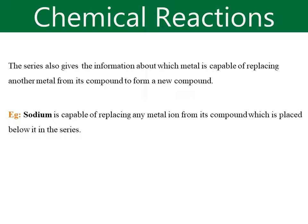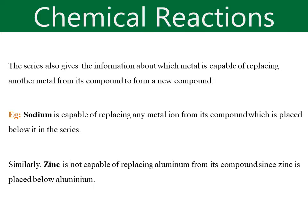Sodium metal is capable of replacing any metal ion from its compound which is placed below it in the series. However, since zinc is placed below aluminum in the series, zinc is not capable of replacing aluminum. If you consider a reaction where Zn + AlCl3 is expected to give ZnCl2, that reaction will never happen because zinc is less reactive than aluminum — so if zinc reacts with an aqueous solution of aluminum chloride, no reaction will take place.